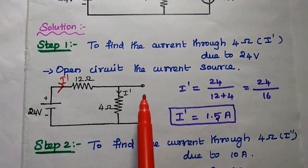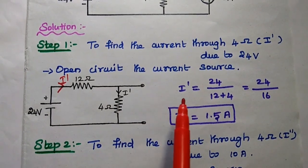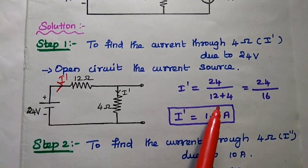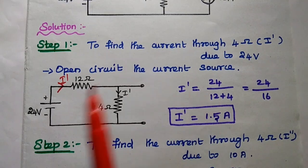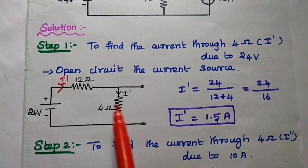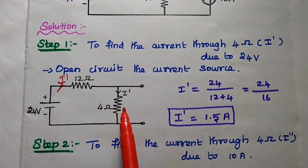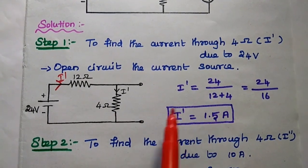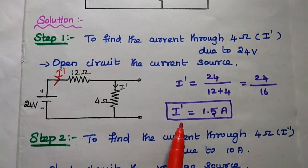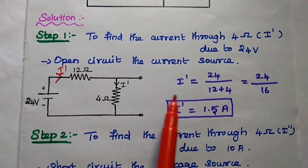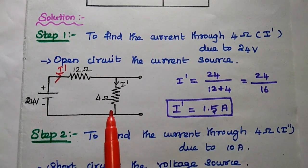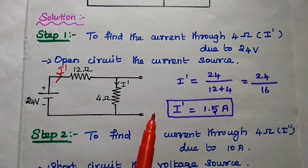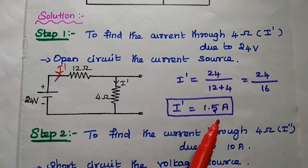According to Ohm's law, I dash is equal to voltage 24 divided by the total equivalent resistance of the circuit. Since these two are in series, we can consider 12 plus 4 that is 16 ohm. Then we can get I dash — the current through this 4 ohm resistor due to the 24 volt source — is 1.5 ampere.